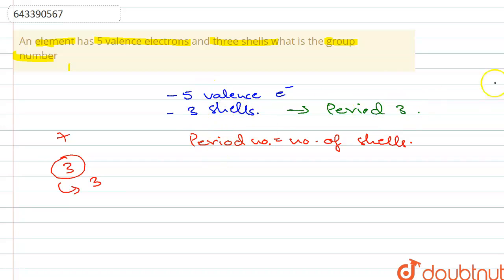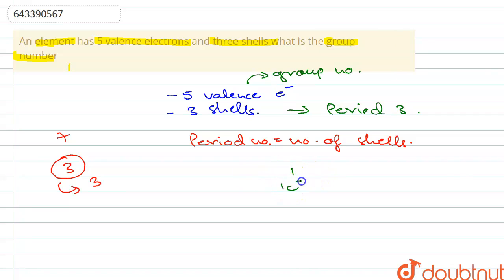The number of valence electrons is denoted by the group number. We can easily find the group number when we know the valence electrons. For example, a group one element will have one electron in its outermost shell, and a group two element will have two electrons in its outermost shell. For elements present in group 13 to group 18, the number of electrons in the outermost shell is calculated differently.